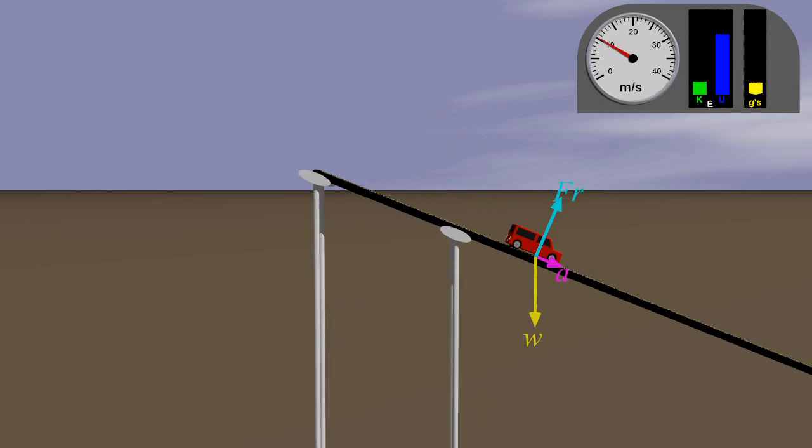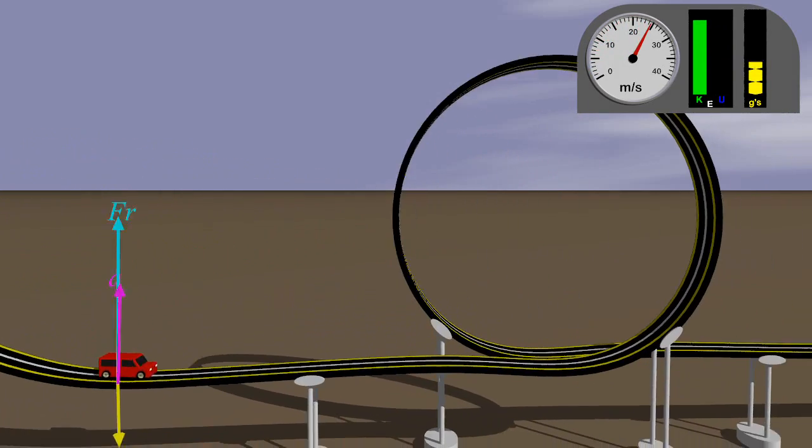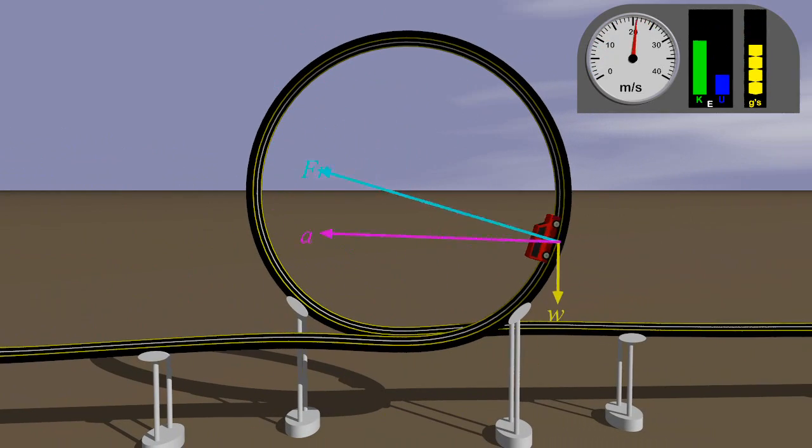A roller coaster will gain speed from the hill, lose some of that speed as it climbs the loop, then regain that speed as it exits the loop. This can all be understood in terms of potential and kinetic energy.